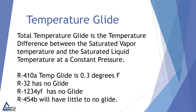R410A has a temperature glide of 0.3 degrees Fahrenheit. R32 has no glide and R1234YF has no glide — and these are the two refrigerants that make up R454B. Therefore, R454B will have little to no glide.